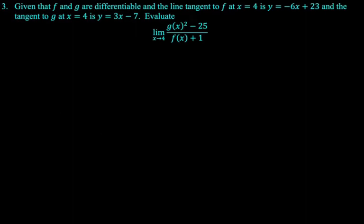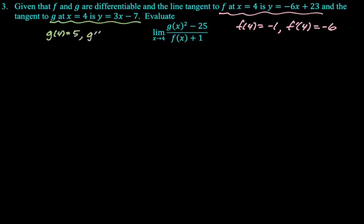All right, given that f and g are differentiable and the line tangent to f at x equals 4 is y equals negative 6x plus 23 and tangent to g at x equals 4 is y equals 3x minus 7, we want to evaluate the limit as x approaches 4 of g of x squared minus 25 over f of x plus 1. All right, well, we have the tangent line, so we sort of implicitly know the value of the function and the derivative at that point. So at x equals 4, I know that f of 4 will be the tangent line value, which will be negative 1. I know the slope of the tangent is f prime of 4. So we actually know f of 4 and f prime of 4. Same for g, right? At x equals 4, we're going to get g of 4 is 12 minus 7, so 5, and g prime should be 3. So that's useful information, but it's not obvious.